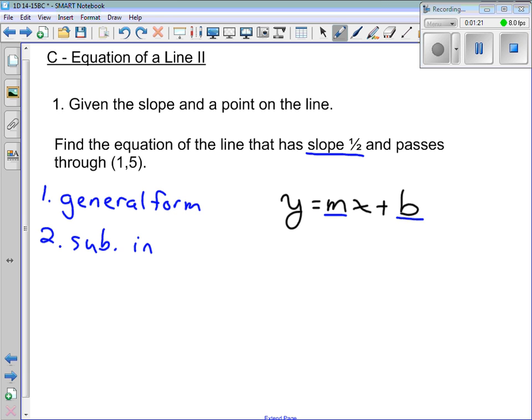We'll just say sub in our value for m. If they give us m, let's sub it in. So now our equation is y equals 1 half x plus b. And our job here is to figure out what b is. But what else are we given in the question? Well, we're given this point (1,5). And the important information that comes from this point is that what we have in this point is we have a value for x and we have a value for y.